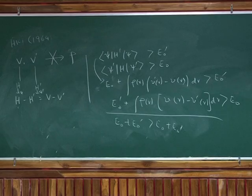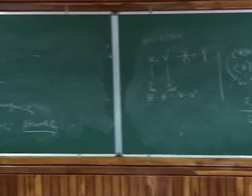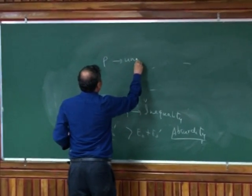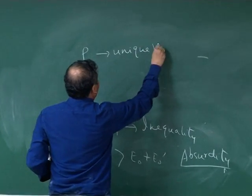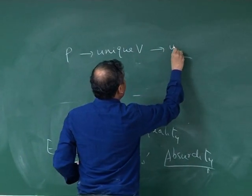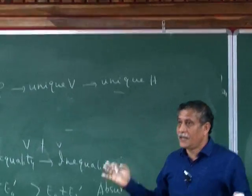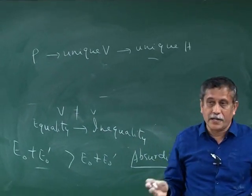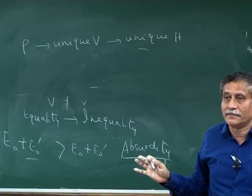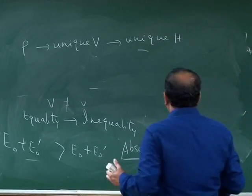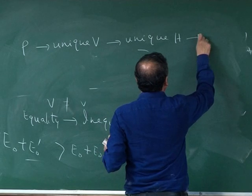So given a rho, there is a unique V. V essentially has a unique Hamiltonian, because I told you for n particle Hamiltonian, the only difference is external potential. Given this unique H, you have unique E0.